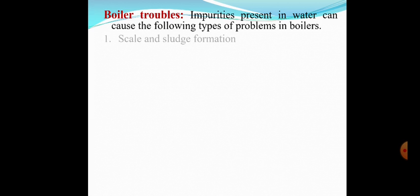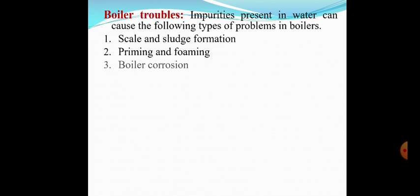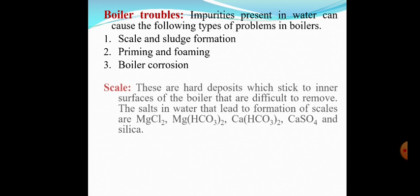The presence of excess impurities in boiler feed water causes the following types of problems in boilers: the first one is called scale and sludge formation, the second one is called priming and foaming, and the third one is called boiler corrosion. These are the three problems commonly observed in boilers due to the presence of more impurities. Now we will start with scale and sludge formation.